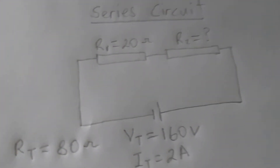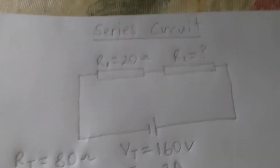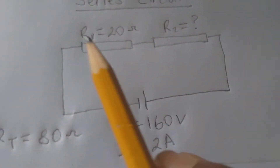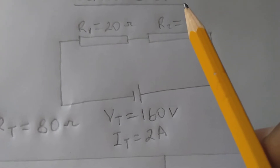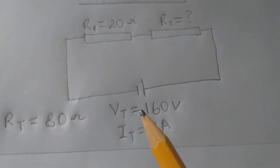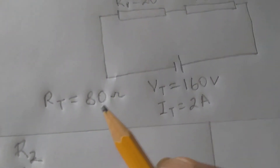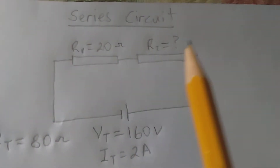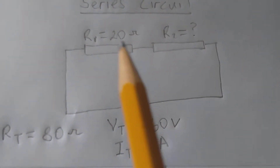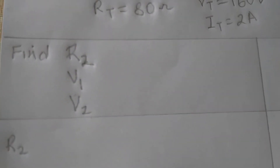Welcome again to another series of electrical calculations. This time we're looking at a series circuit where resistor R1 is 20 ohms. We don't have resistor R2. The total voltage is 160 volts, the total current is 2 amperes, and the total resistance is 80 ohms. We are required to find R2, V1 (the voltage across R1), and V2 (the voltage across R2).